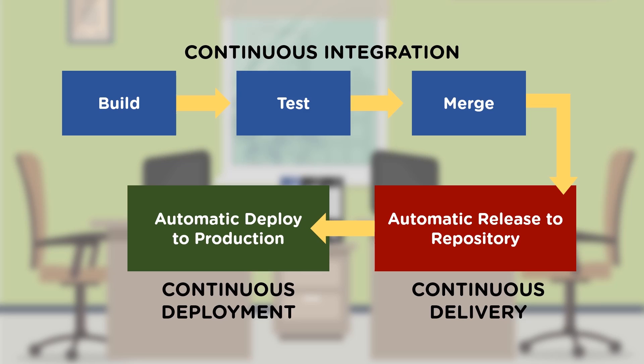Continuous integration is about integrating source code from each individual developer's machine to a shared location — a version control system. Once changes are checked into the version control system, automated builds and test case executions can happen based on order triggers.